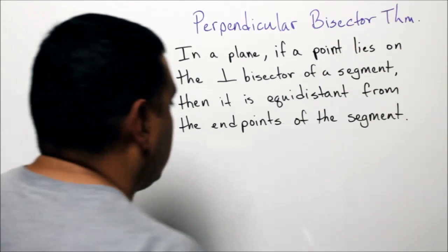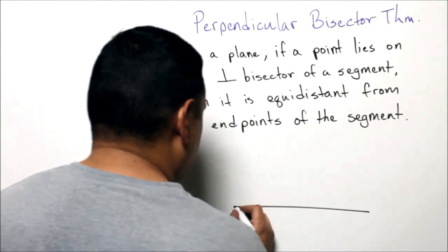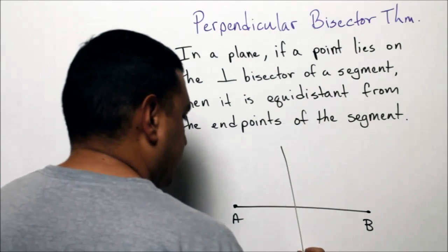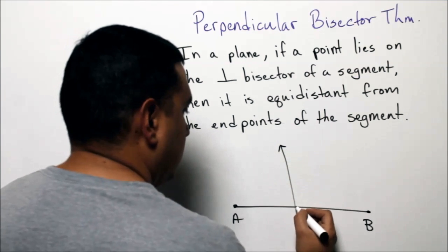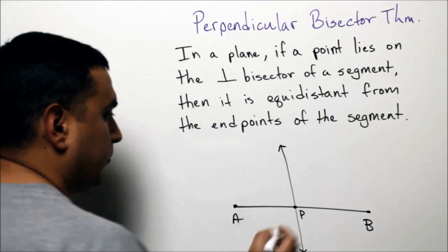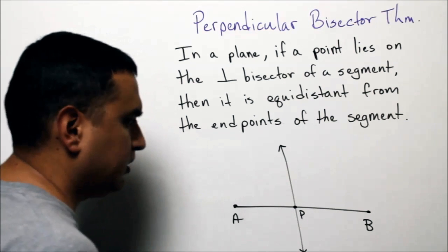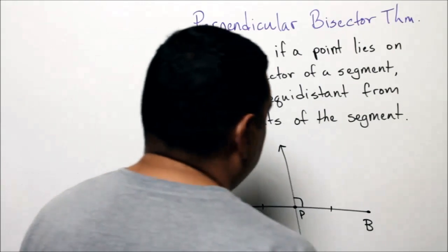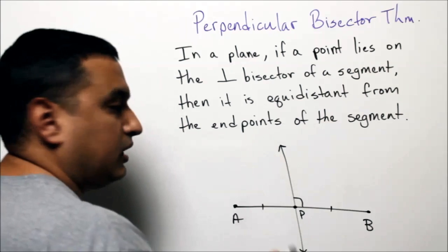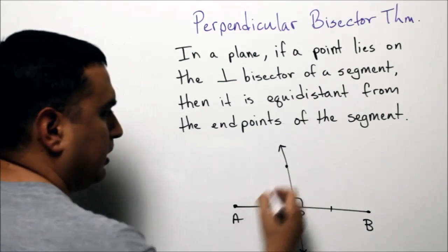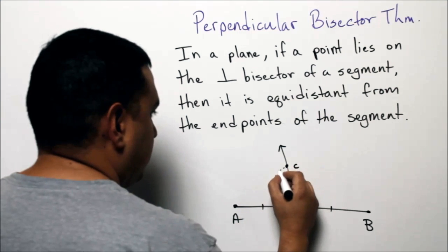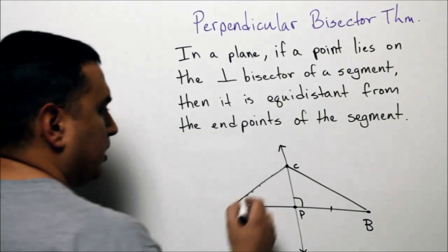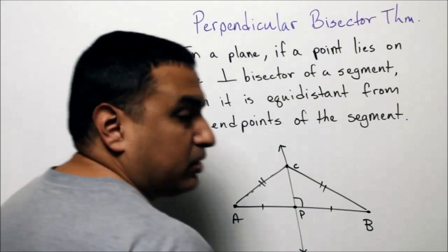Let's draw that out. I have a segment — we'll call it AB. If I draw a perpendicular bisector and call the midpoint P, I know that's a 90-degree angle and those two segments are congruent. What this theorem says is that if I pick a point anywhere on this line — let's call it C — then the distance from C to A and the distance from C to B are going to be the same. That's the perpendicular bisector theorem.